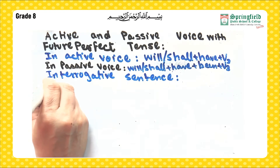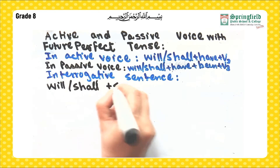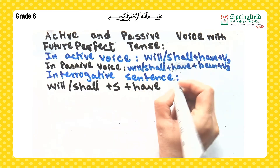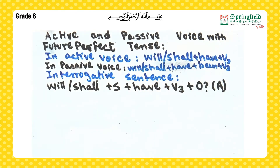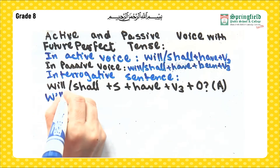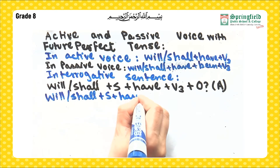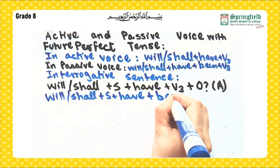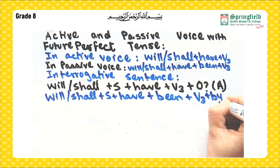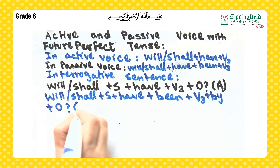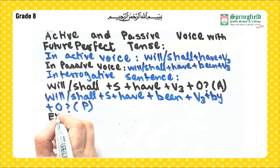Now let's begin with interrogative sentences. The sentence construction in active voice is: will or shall plus subject plus have plus verb third form plus object, question mark. In passive voice it becomes: will or shall plus subject plus have plus been plus verb third form plus by plus object, question mark.